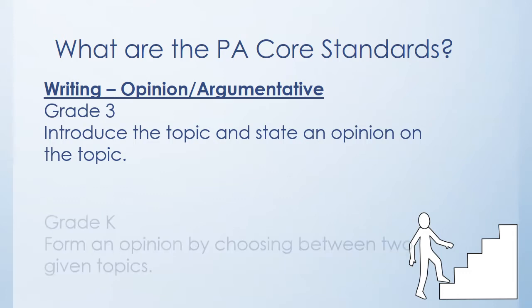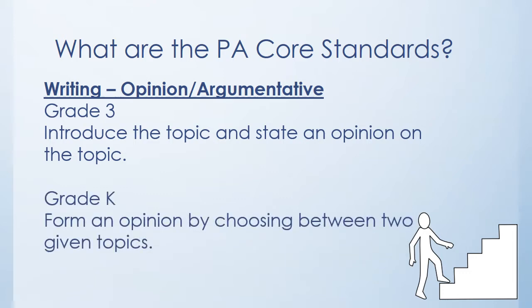However, you will notice a difference in kindergarten. In kindergarten, we ask students to form an opinion by choosing between two topics. For example, the kindergarten teacher may ask students which type of pet is better—a puppy or a kitten. Students will choose one and give reasons why that pet is better. Similar to the reading example, the skills they learn in elementary school build to the expectation in 12th grade. Before they can argue a particular stance in writing, they must first be able to form an opinion and support that opinion with reasons and evidence.